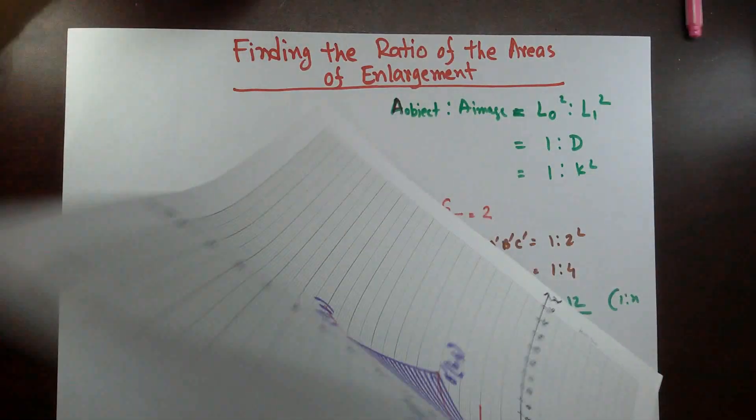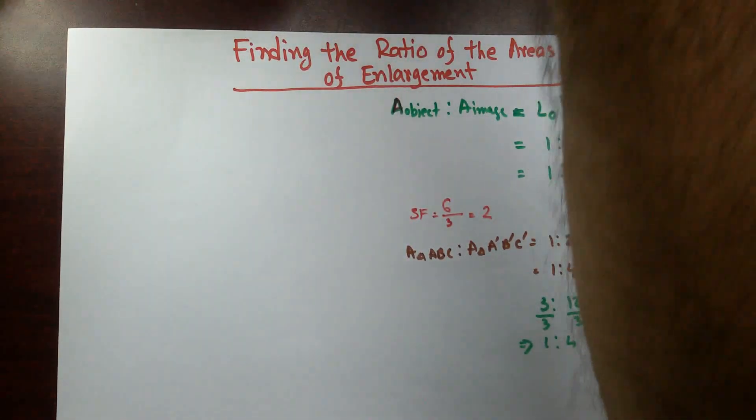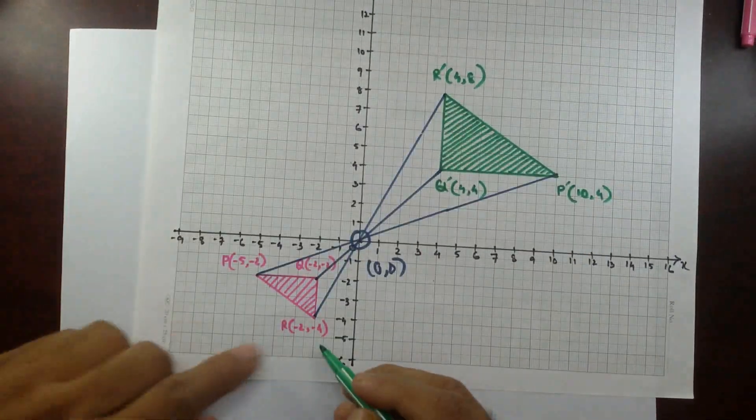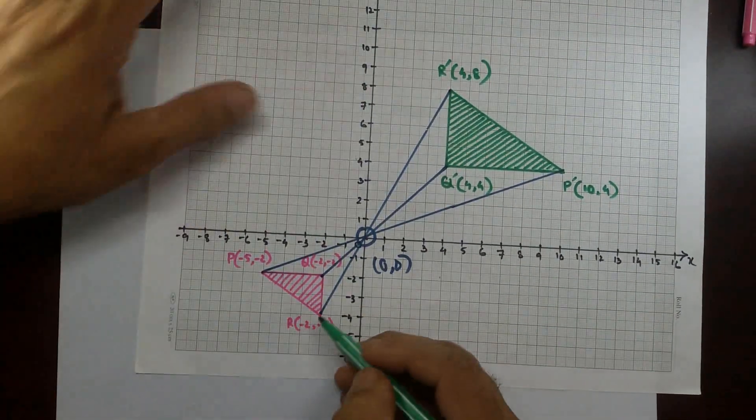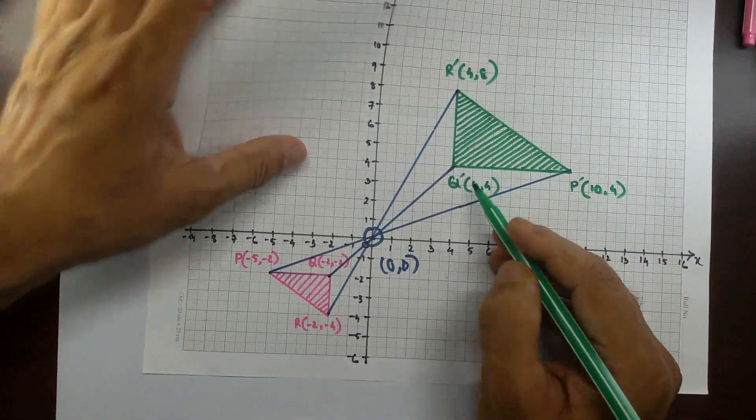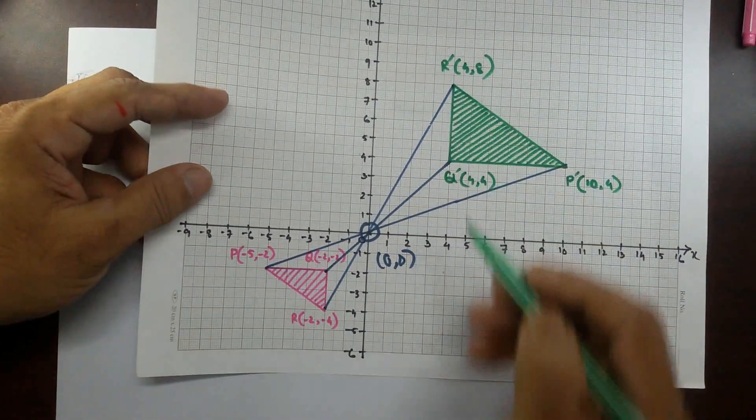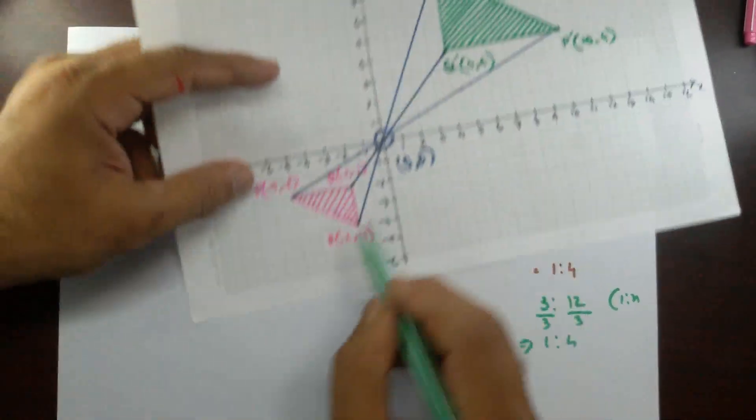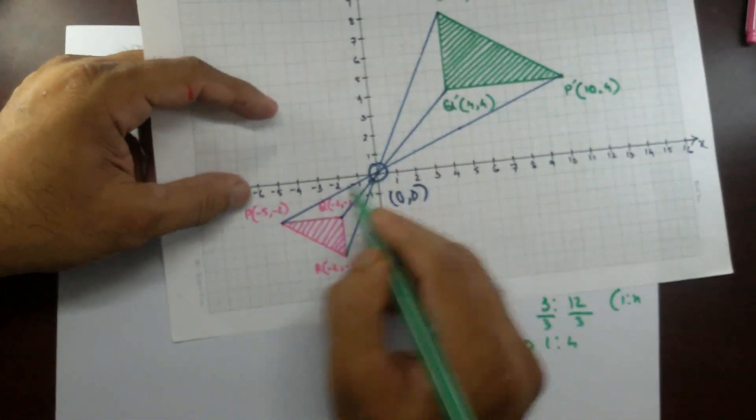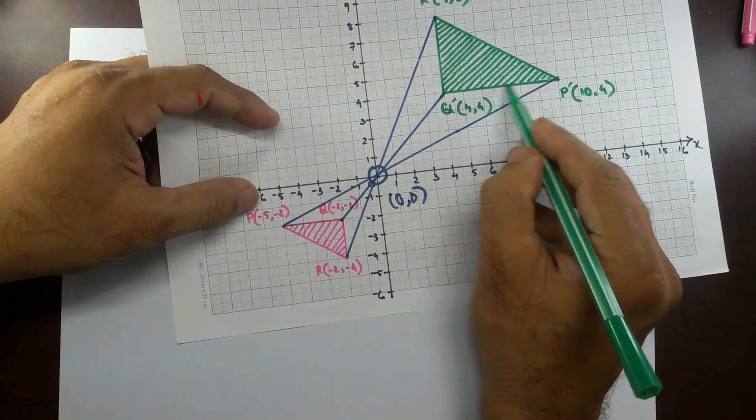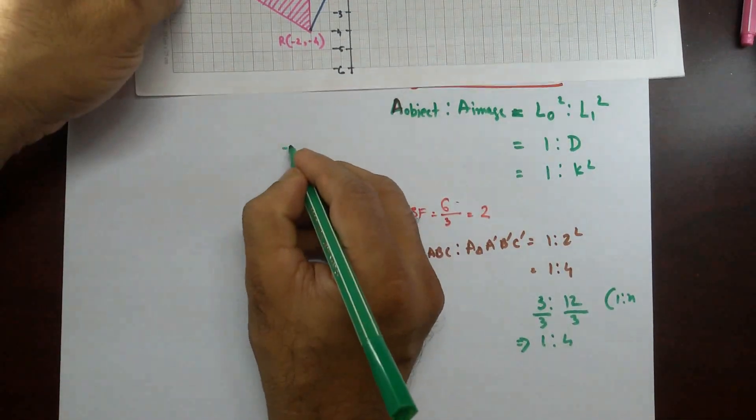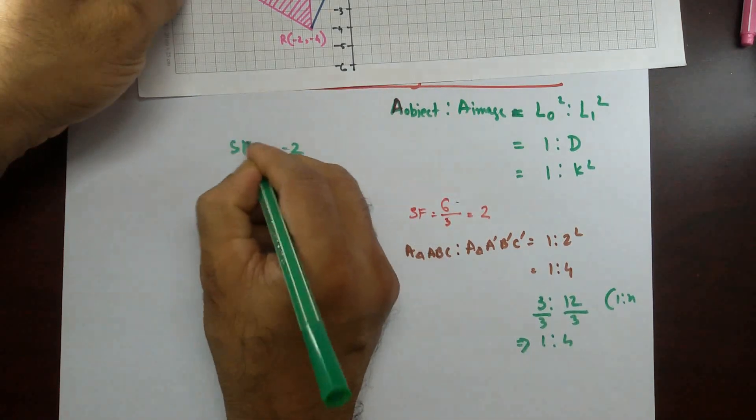I want to show you one more with the center because then we can use the determinant. Now this center and this object was PQR and the image was P prime, Q prime, R prime. So probably you remember the scale factor. Again, we can check it. The image 1, 2, 3, 4, 5, 6 and this is 1, 2, 3. The scale factor was minus 2.